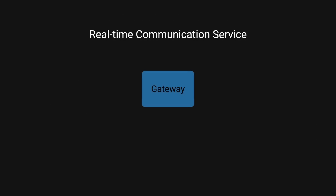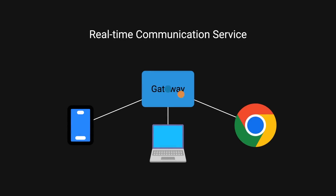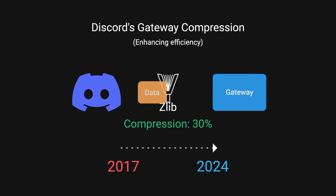Their real-time communication is a service called Gateway, which provides instant updates to clients. Since 2017, Discord has been using Zlib compression for these gateway connections.